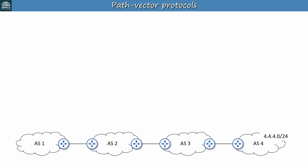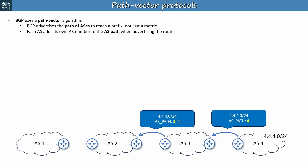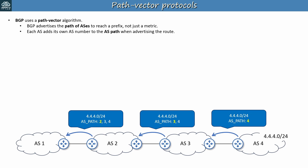Finally, let's look at path vector protocols — or more accurately, one path vector protocol: BGP. BGP is classified as a path vector protocol; the path is the sequence of autonomous systems used to reach a destination prefix, and the vector is the next hop toward that path. When BGP advertises a route, it includes the AS path attribute — a list of ASs to reach that prefix, not just a simple metric value. Each AS adds its own AS number to the AS path when advertising the route. In our example, a router in AS4 advertises 4.4.4.0/24 with AS path 4; AS3 adds its own AS so the advertised path is AS3, AS4; and AS2 adds its own, making the path AS2, AS3, AS4. If a router sees its own AS in the path, it rejects the advertisement — this is how BGP prevents loops.